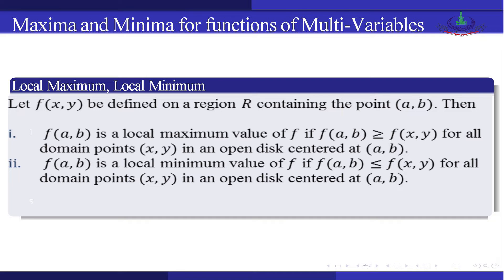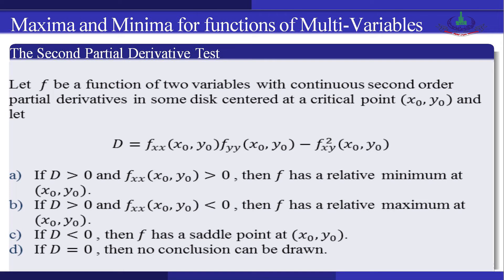The second case: f(a, b) is the local minimum value of f if f(a, b) ≤ f(x, y) for all domain points (x, y) in an open disk centered at the point (a, b). Now we see the second partial derivatives test. Let f be a function of two variables with continuous second-order partial derivatives in some disk centered at the critical point (x₀, y₀).